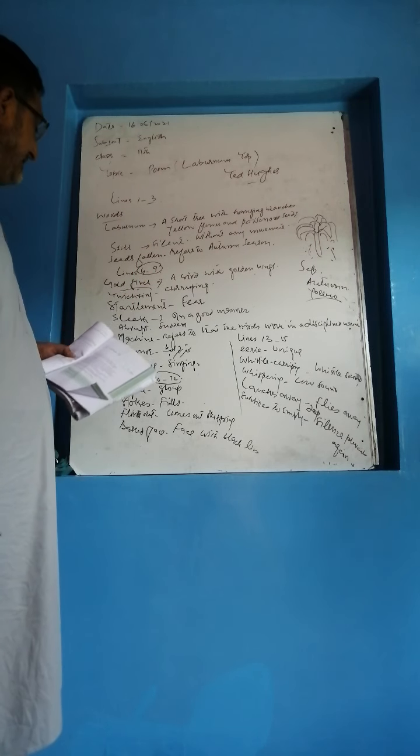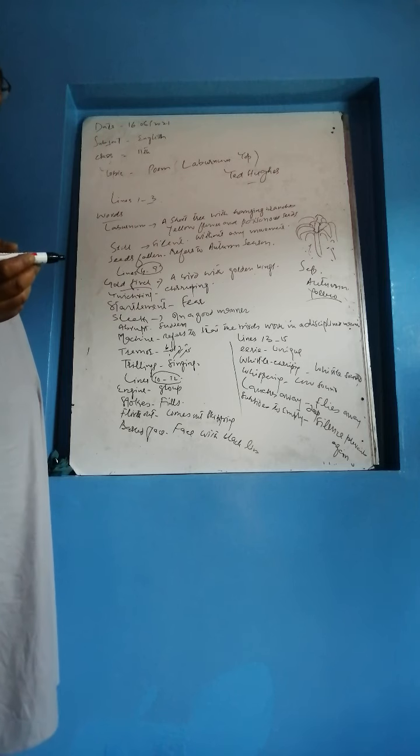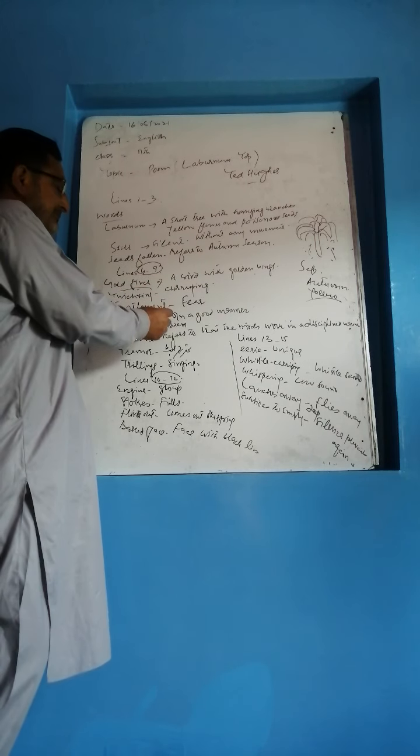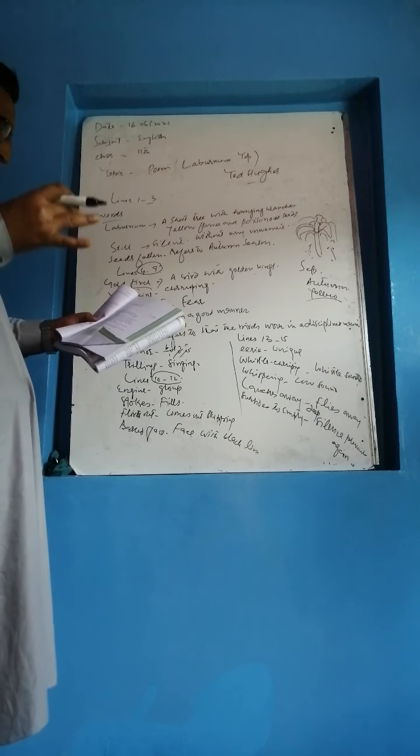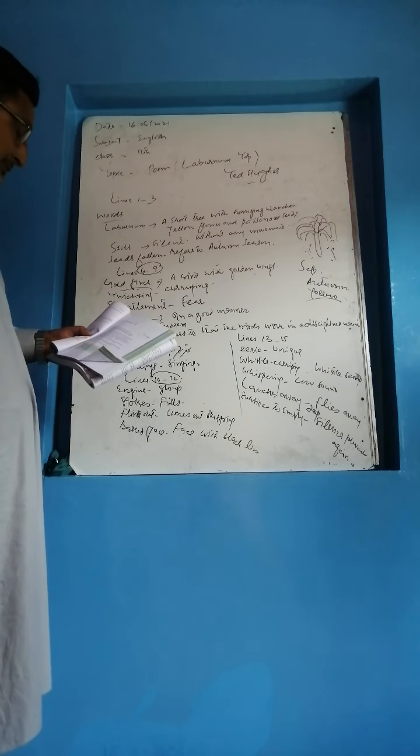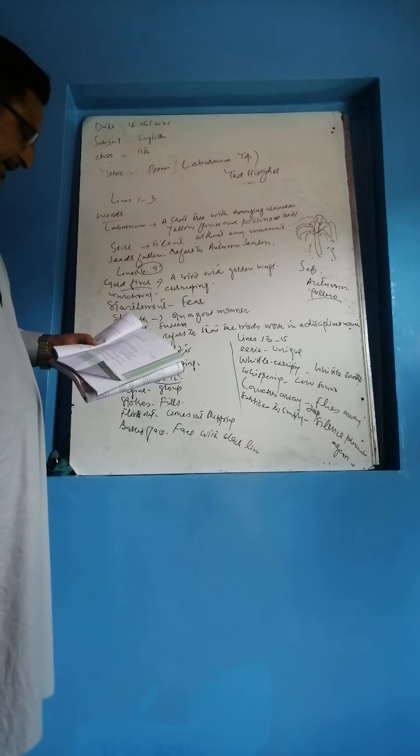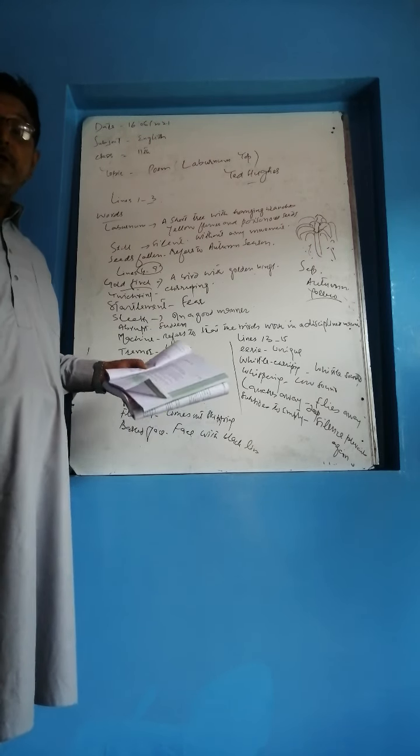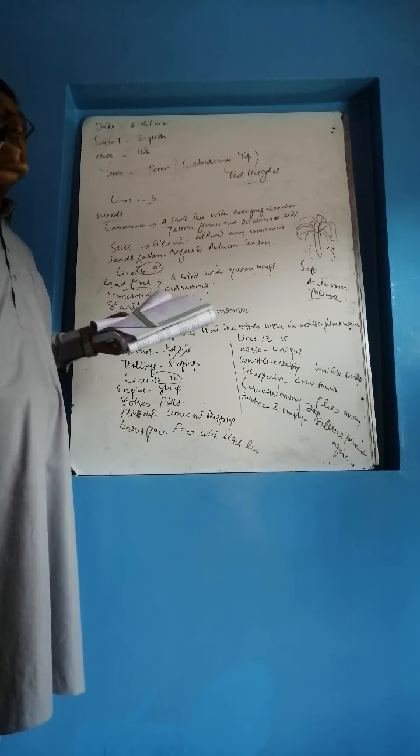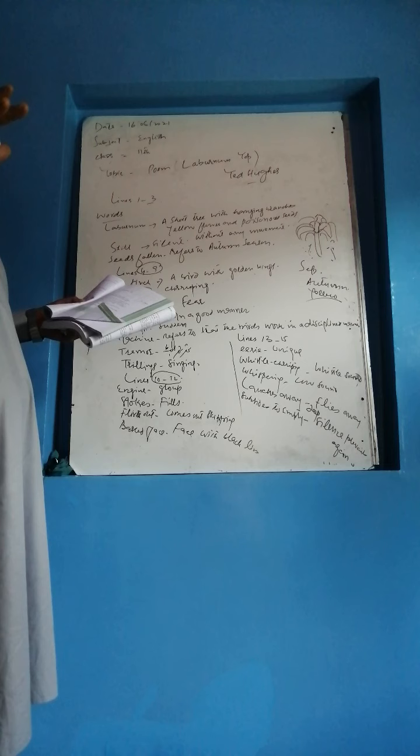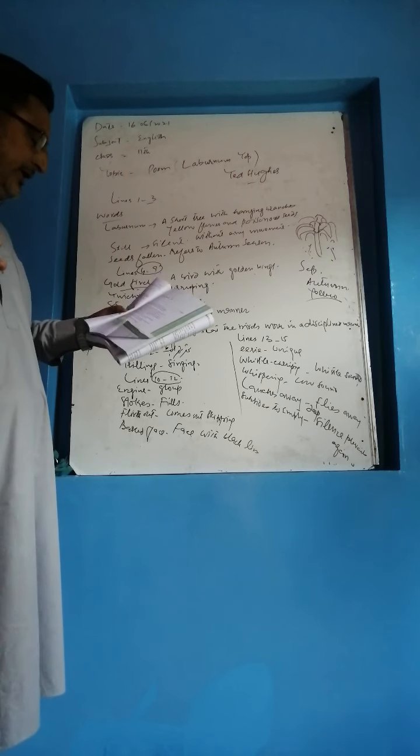Then sleek as a lizard, this goldfinch is like a lizard. Sleek means in a good manner, in a very soft manner. Sleek as a lizard, and alert, very active, and abrupt. Abrupt means sudden. There comes the chittering, the chirping and a tremor of wings. The chirping of birds, this whole silence breaks out.